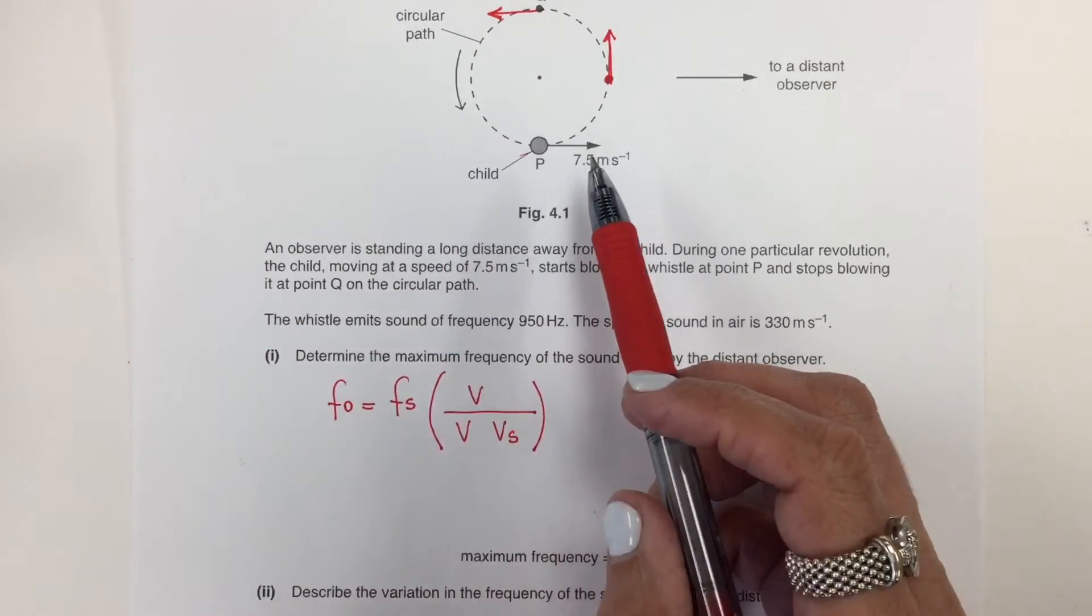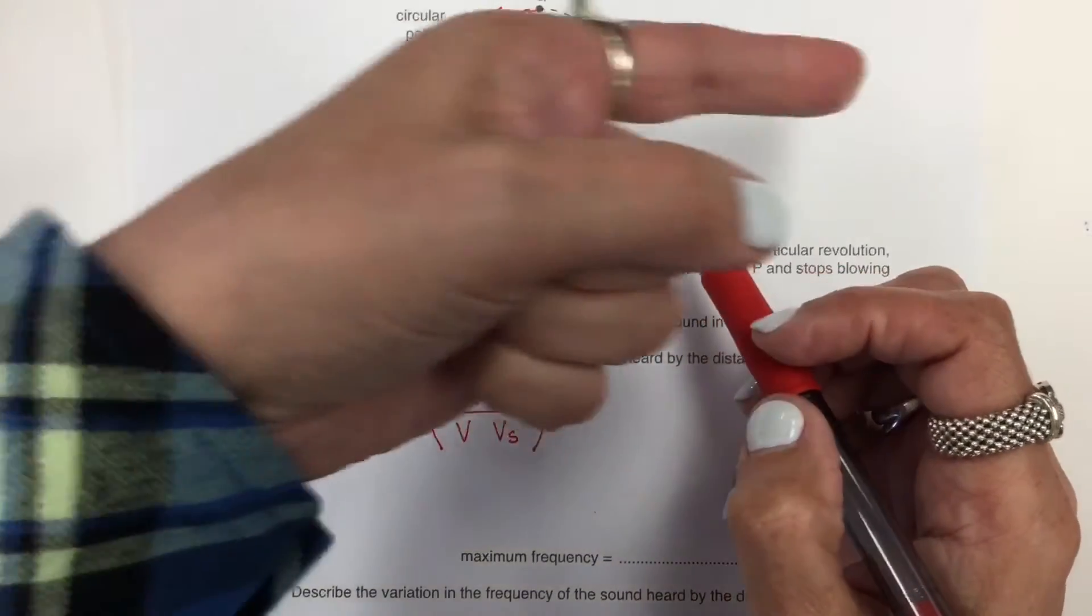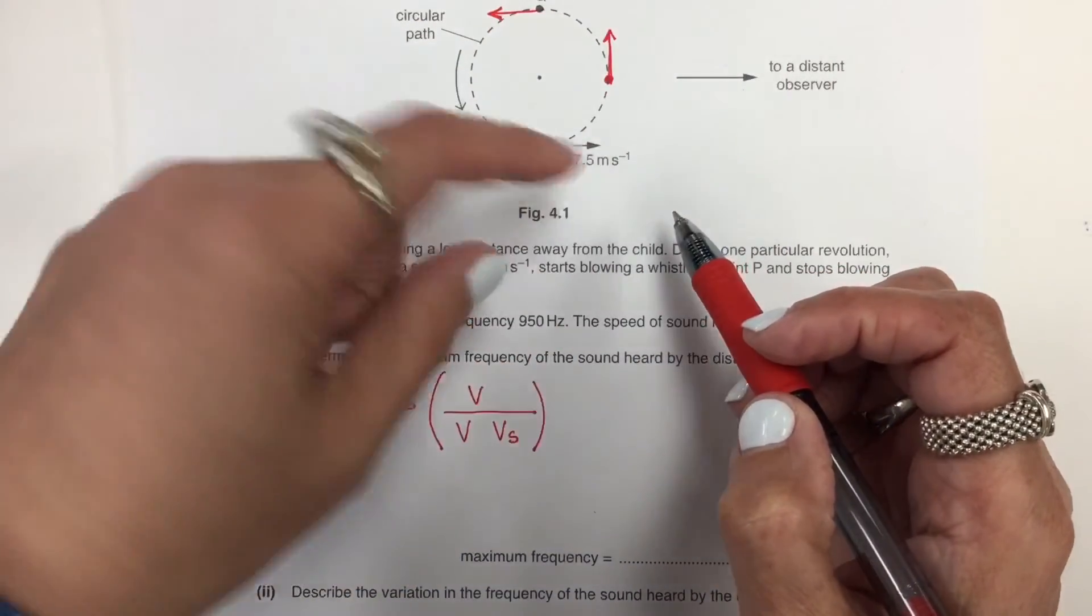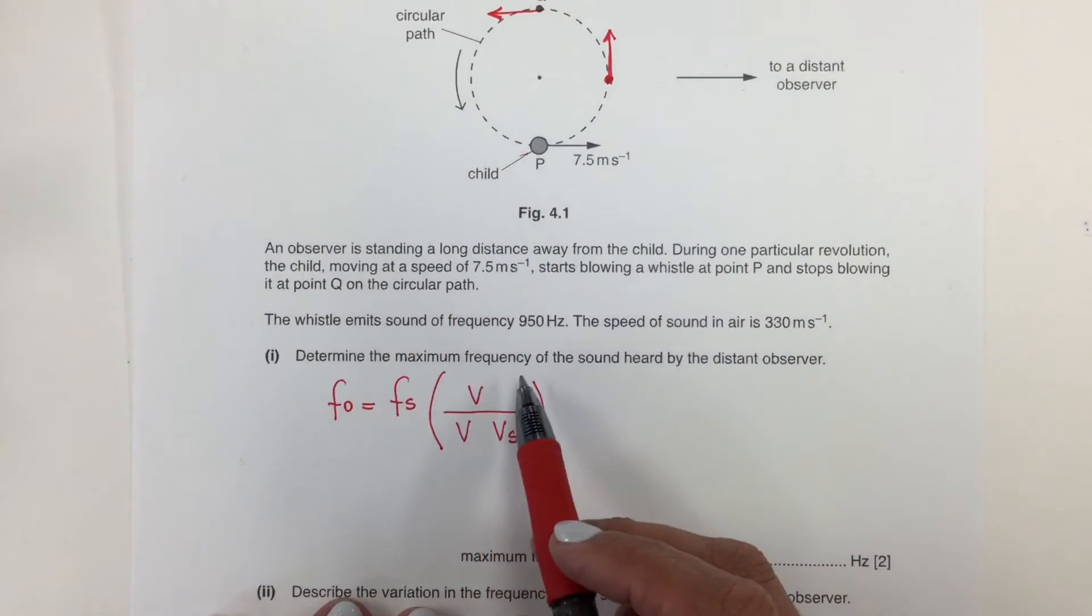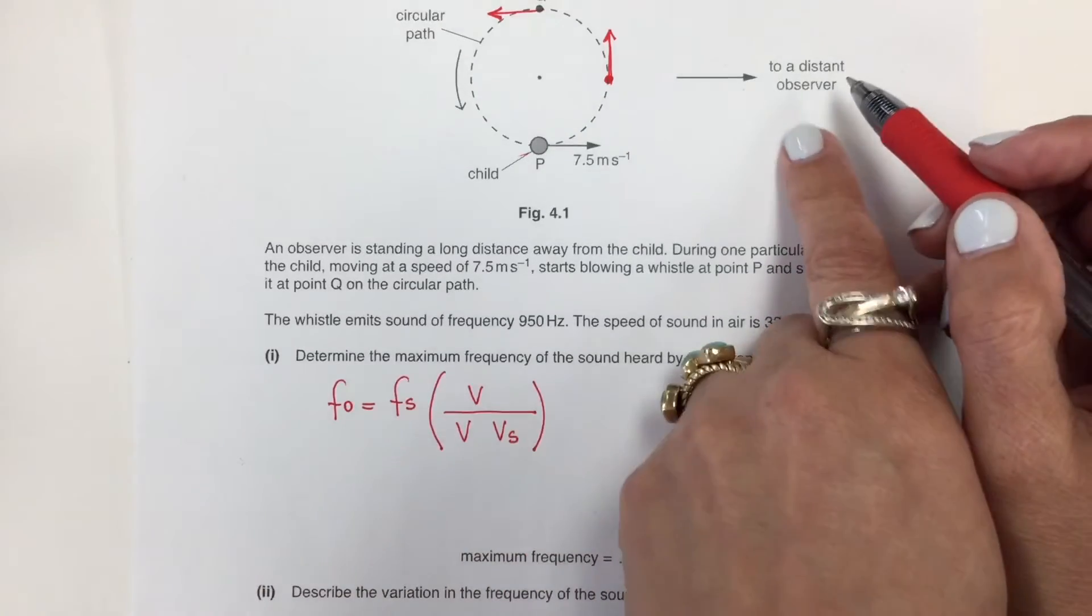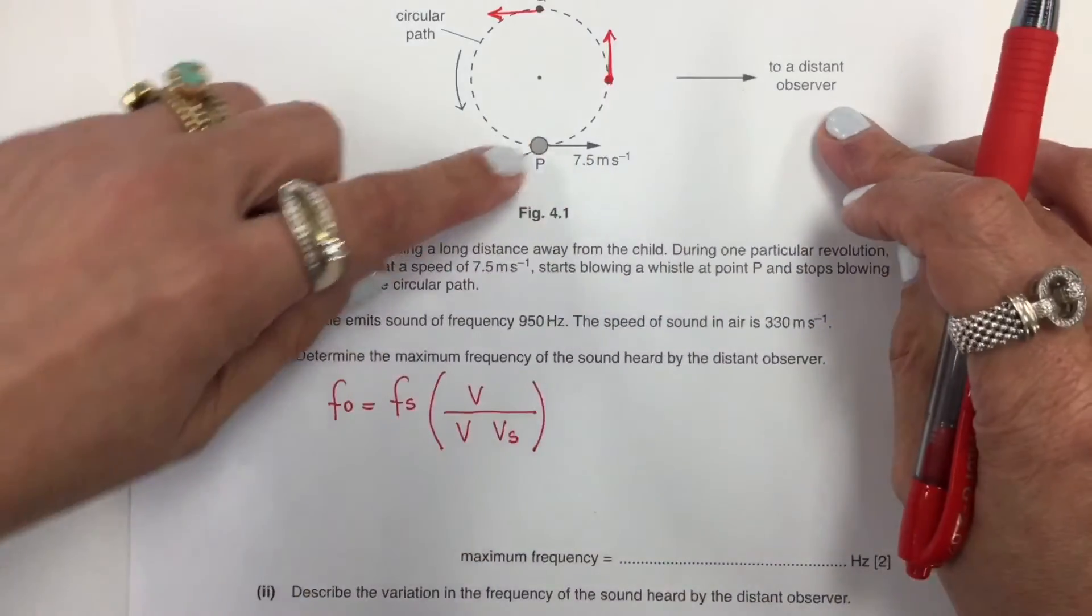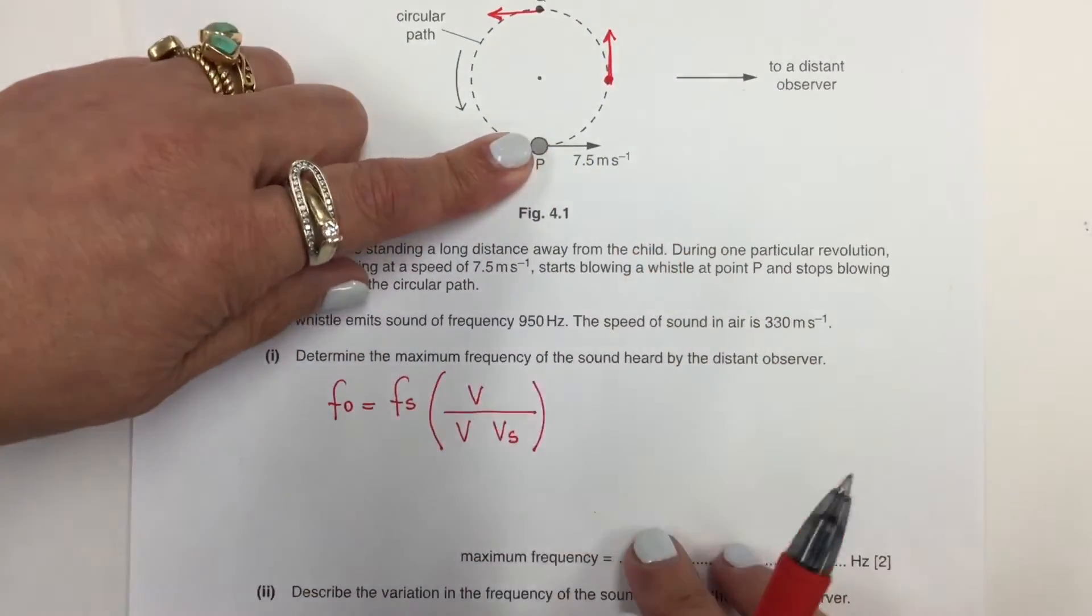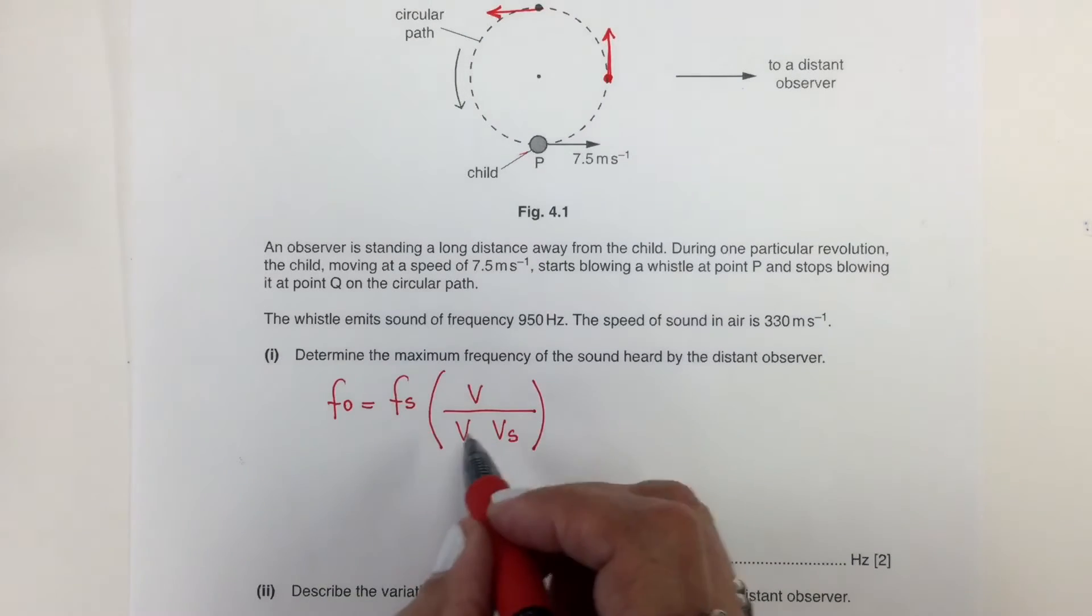To produce a maximum frequency, the sound source must be moving toward the observer. In this case, it's pointing to the direction of the observer. So in this case here, that will be the maximum frequency. And that frequency will be observed higher than emitted by the sound source. So for this to happen mathematically, the sign being used here is minus.